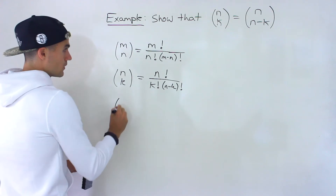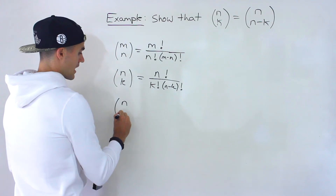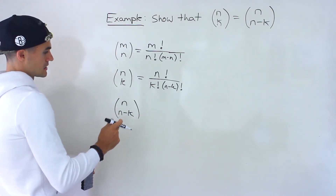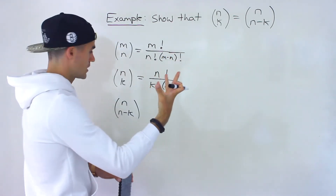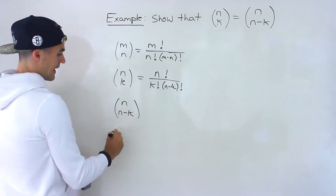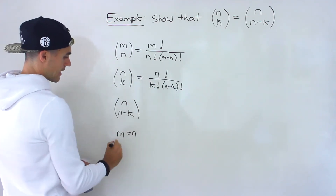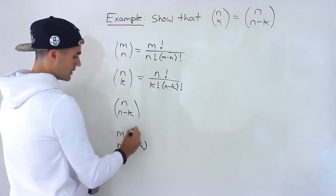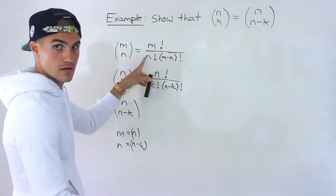Now the trick we want to work with is going to be n choose n minus k. Here we have two terms, whereas in the general formula we have one. So in this case, the m here is equal to n, and this n is equal to n minus k.